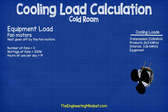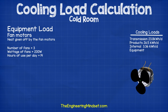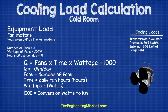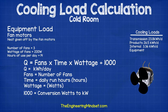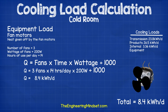Now we calculate the heat generation from the fan motors in the evaporator. In this cold room we'll be using three fans rated at 200 watts each, estimated to run for 14 hours per day. Using the formula q equals fans multiplied by time multiplied by wattage divided by 1000, where fans is the number of fans, time is daily run hours and wattage is the rated power of the fan motors, dropping those numbers in gives 8.4 kilowatt hours per day.